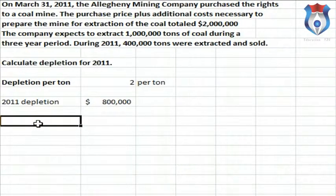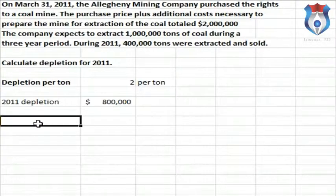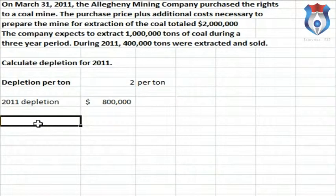Depletion is part of the product cost and is included in the cost of inventory — just like depreciation of manufacturing equipment is included in inventory costs under GAAP. Depletion is included in cost of goods sold in the income statement when the coal is sold. One difference between depletion and regular depreciation is that depletion generally goes right to the asset account: debit depletion for $800,000 and credit the coal mine. An accumulated depletion account can be used, but generally it goes right to the asset.